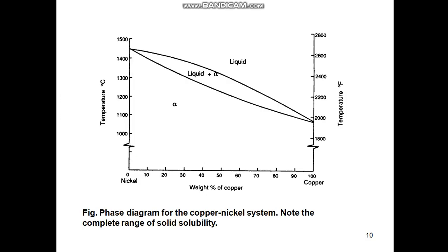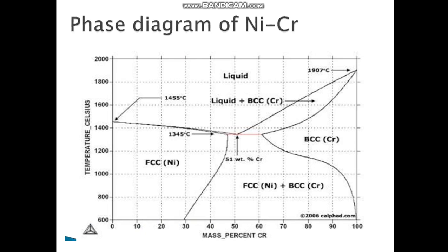Here is the phase diagram for the copper-nickel system — it is an isomorphous phase diagram showing temperature versus weight percent copper. You will see complete solid solubility of copper in nickel across the entire composition range. Here also is the nickel-chromium binary phase diagram.